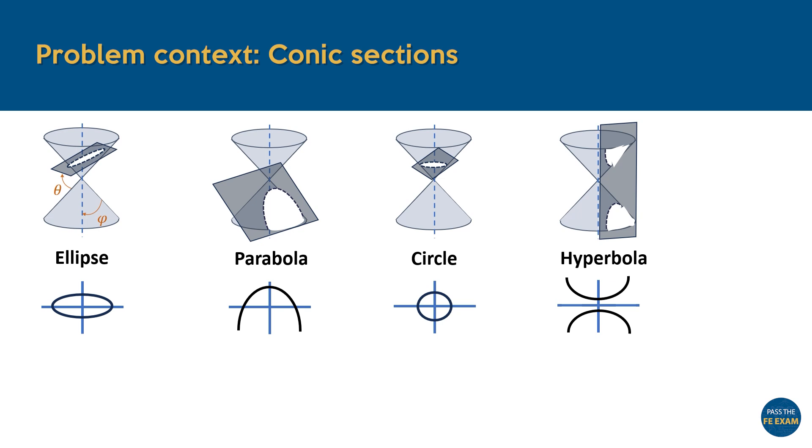If these two angles are known, we can calculate what is referred to as the eccentricity of the conic section, using the formula E equals cosine of theta divided by cosine of phi. This eccentricity can help us classify the different curves.